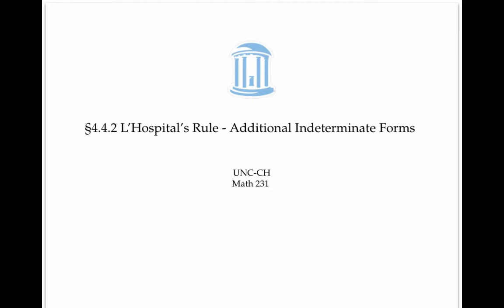We've seen that L'Hôpital's rule can be used to evaluate limits of the form 0 over 0, or infinity over infinity. In this video, we'll continue to use L'Hôpital's rule to evaluate additional indeterminate forms, like 0 times infinity, infinity to the 0, 0 to the 0, and 1 to the infinity.